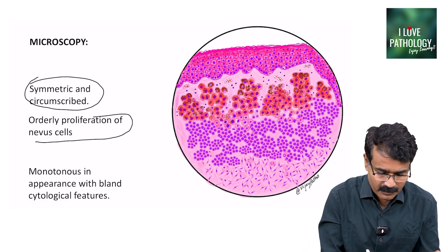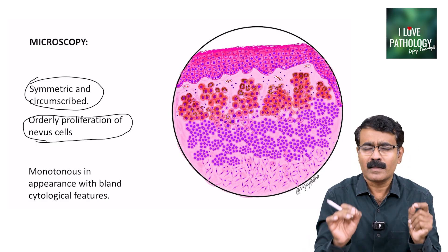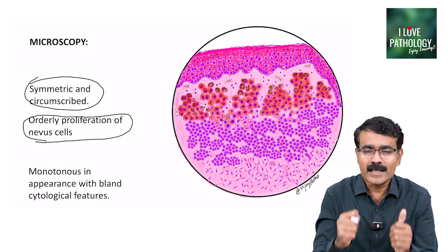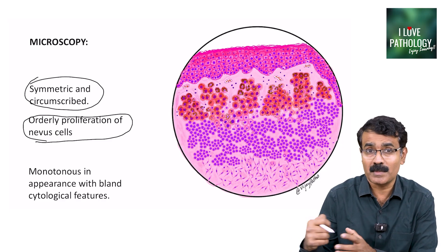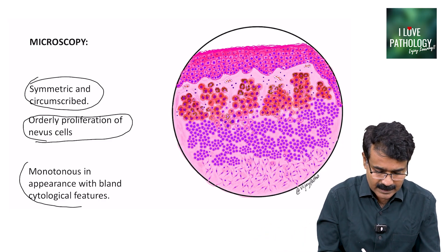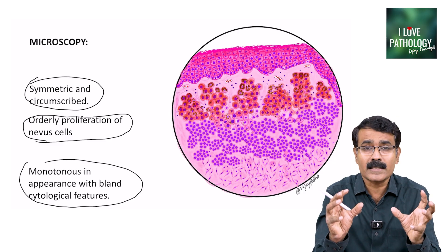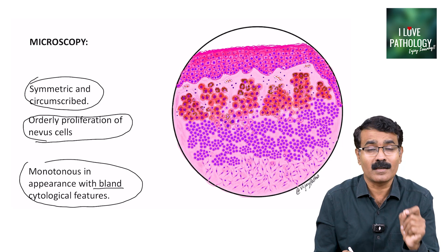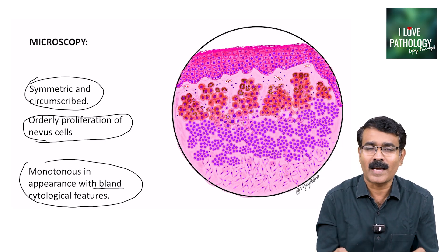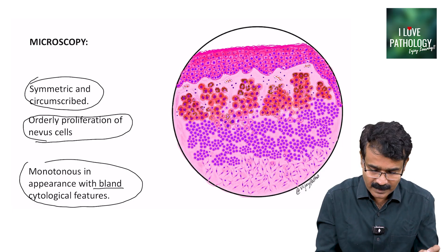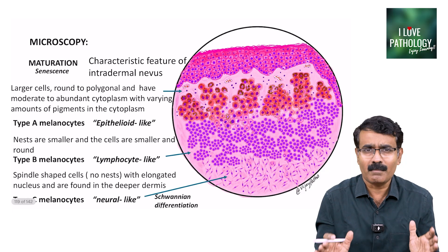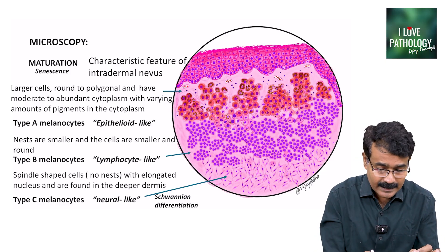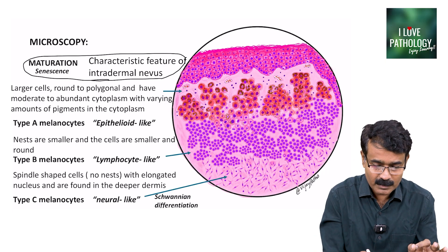There is orderly proliferation of the nevus cells — this is the characteristic feature. The maturation of the nevus cells in this tumour is what differentiates intradermal nevus from malignant melanoma, which I will discuss a bit later. All these cells are monotonous in appearance — they look similar, each cluster looks similar — monotonous appearance with bland cytological features. No nuclear features of malignancy are found in intradermal nevus. Maturation senescence is a characteristic feature of intradermal nevus.